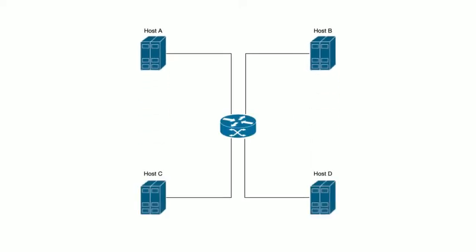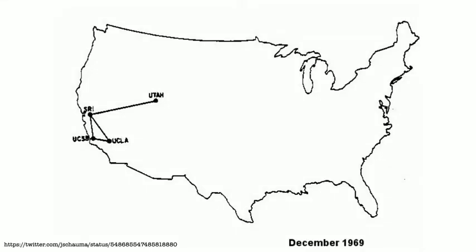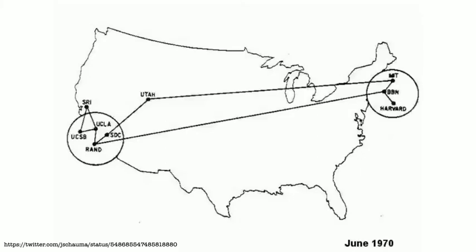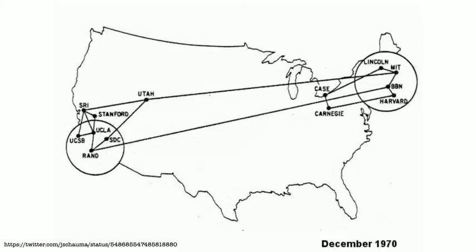How do you know how to reach each system? Well, we assign them IP addresses. But now you have a problem. You have to remember that the system in the upper left that you want to talk to has the IP address 198.51.100.195, and the other one, hostb, has address 192.0.2.80, and so on. And people are really bad at remembering numbers. Especially as the Internet grew, this became an unscalable solution.